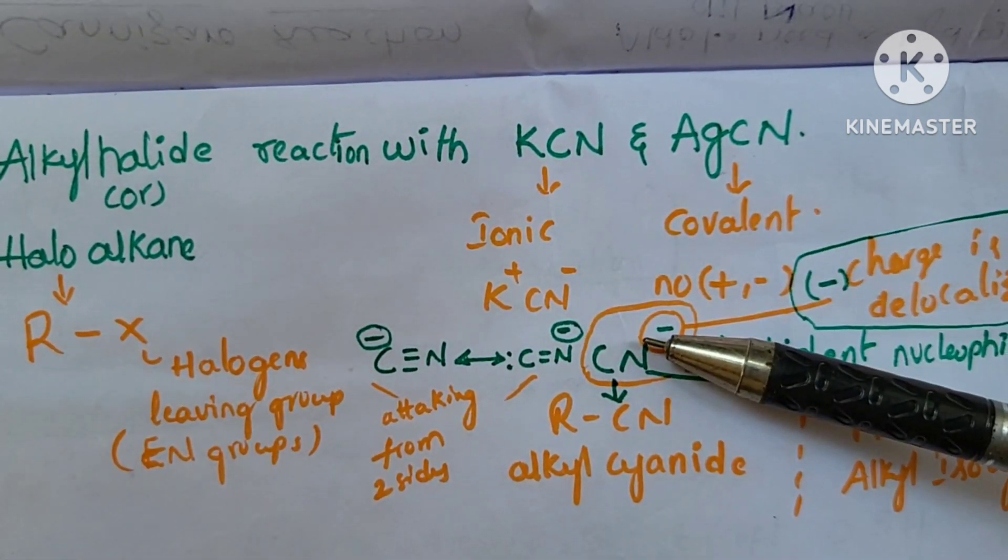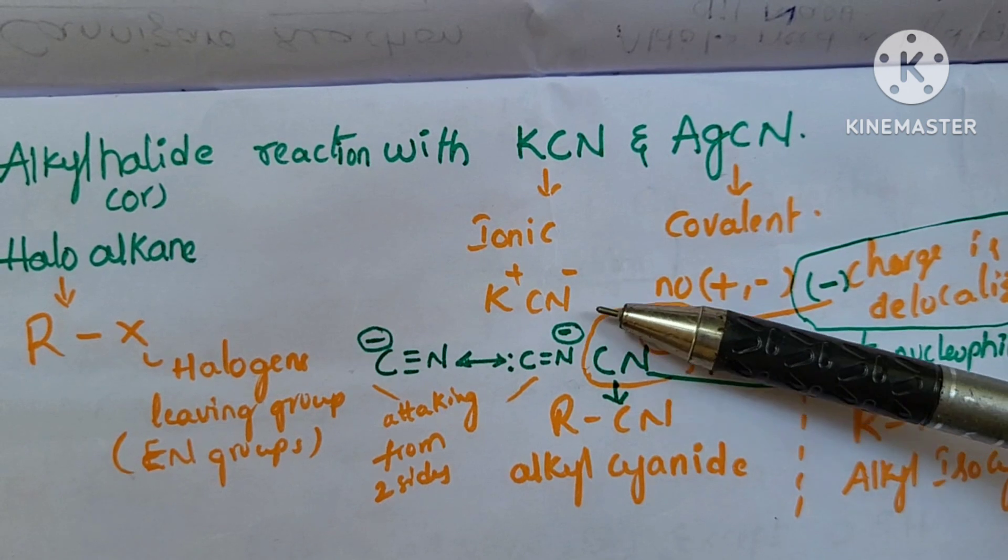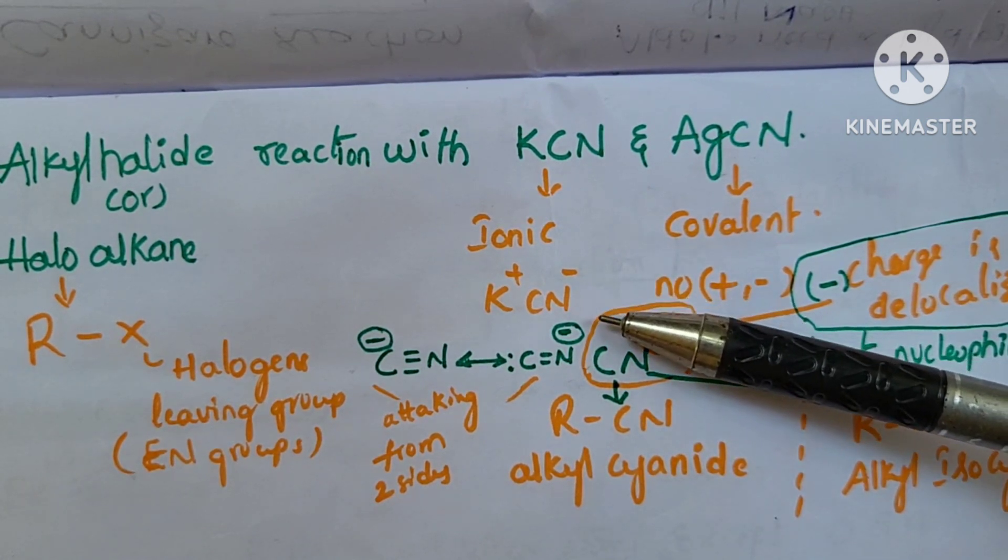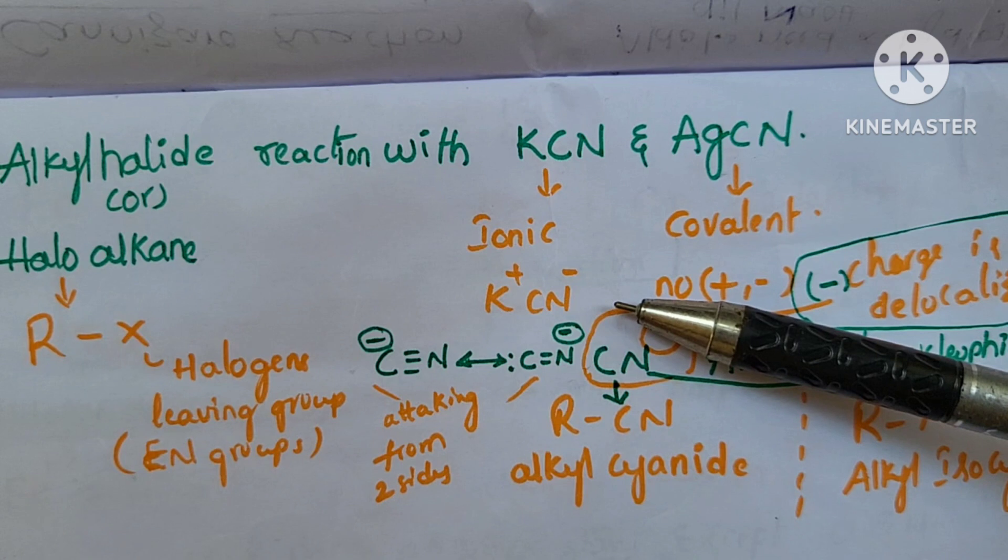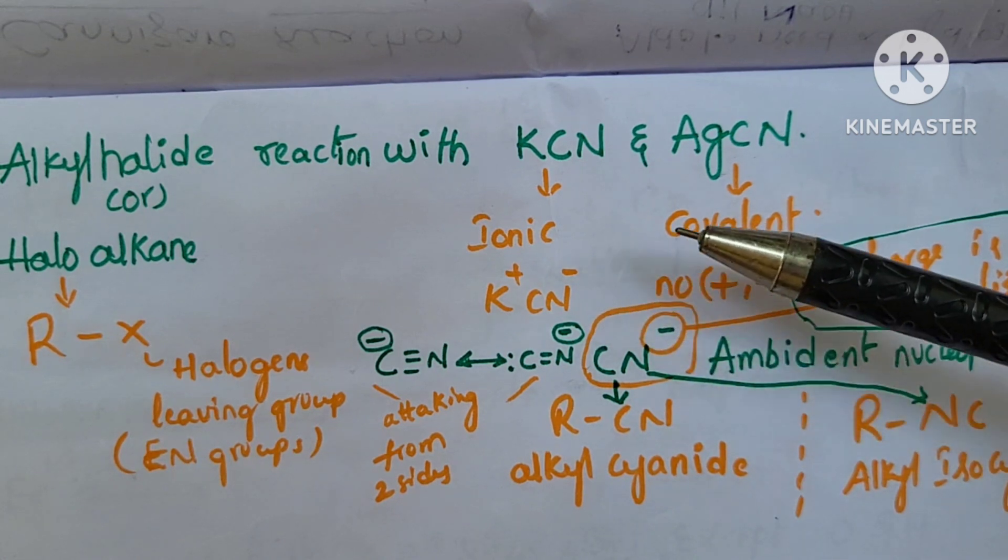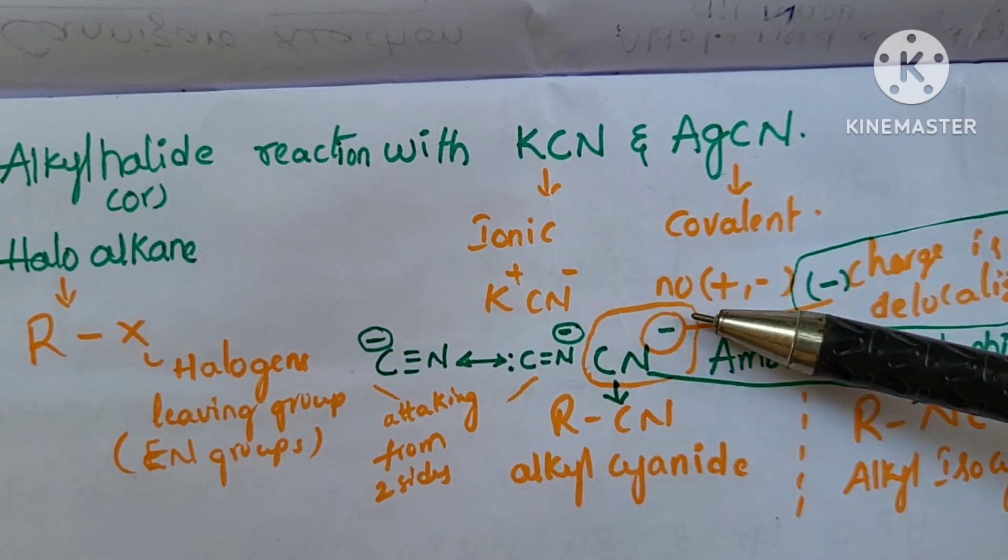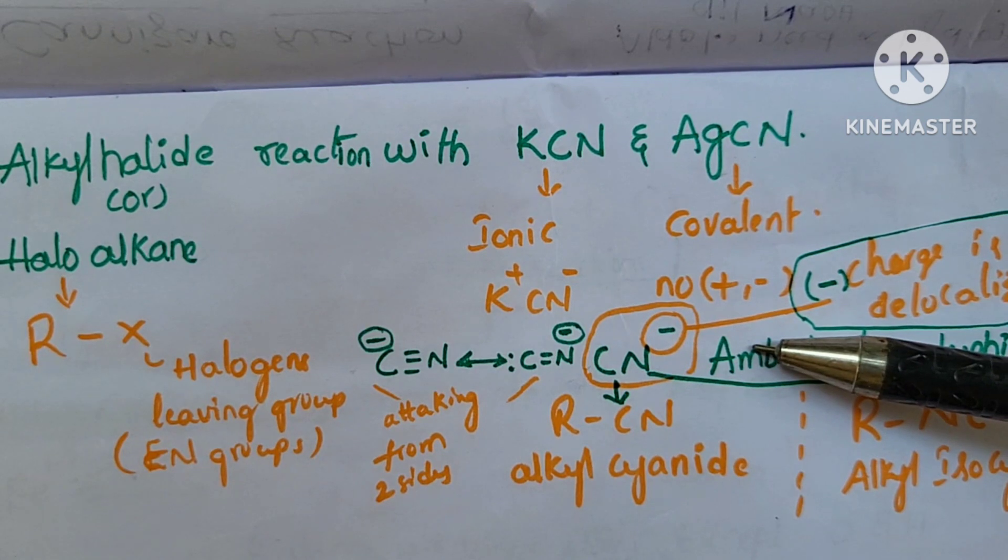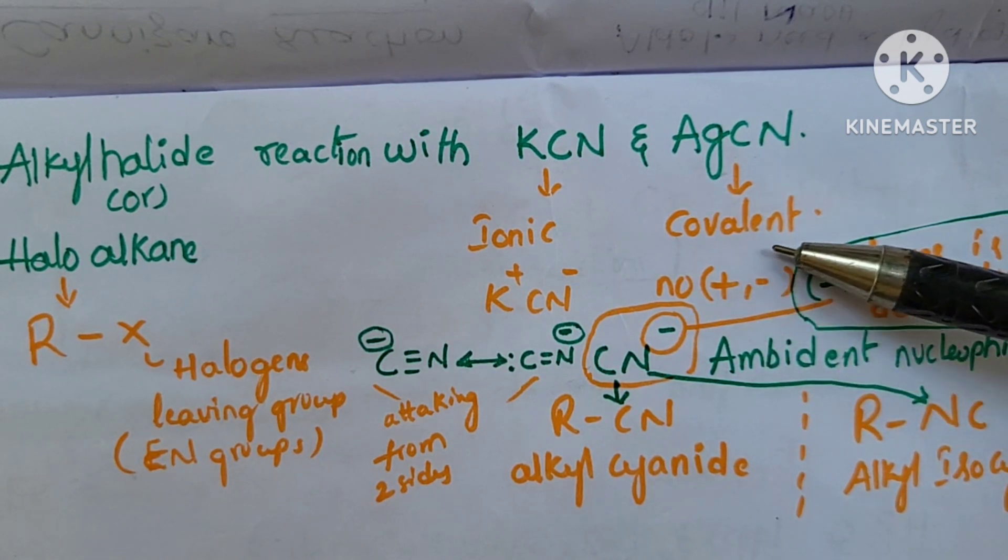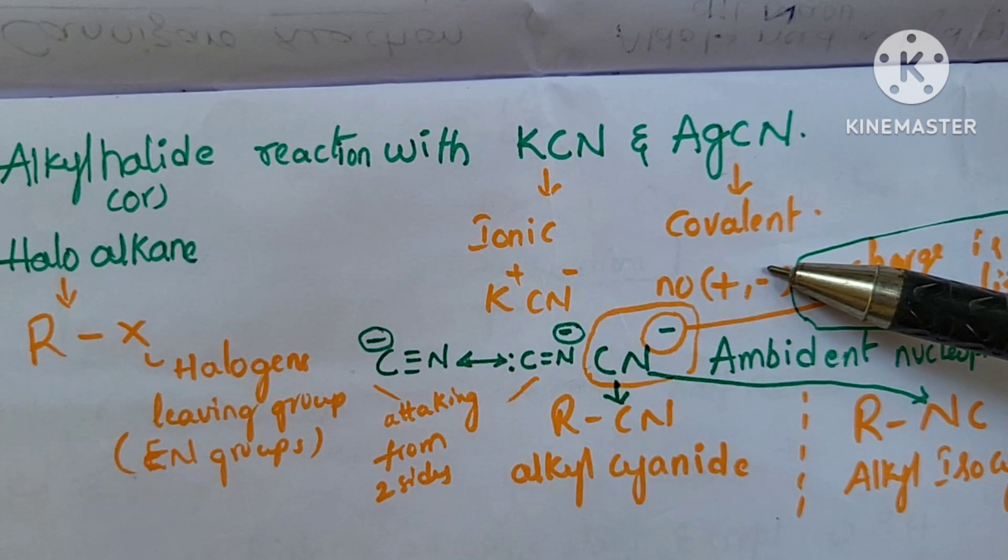In ionic compounds, we have cation and anion, plus and minus charges. But in the covalent bond, no plus and minus. Here there is sharing of electrons. We can form the covalent bond.